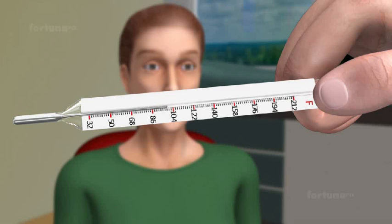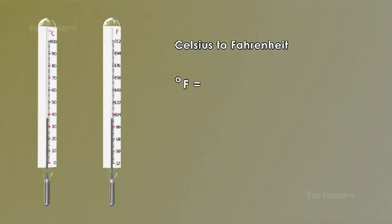If we know the temperature on one scale it's easy to convert it to the other using two formulas. To convert the temperature from Celsius to Fahrenheit we can use the equation F is equal to C multiplied by 9 divided by 5 plus 32.